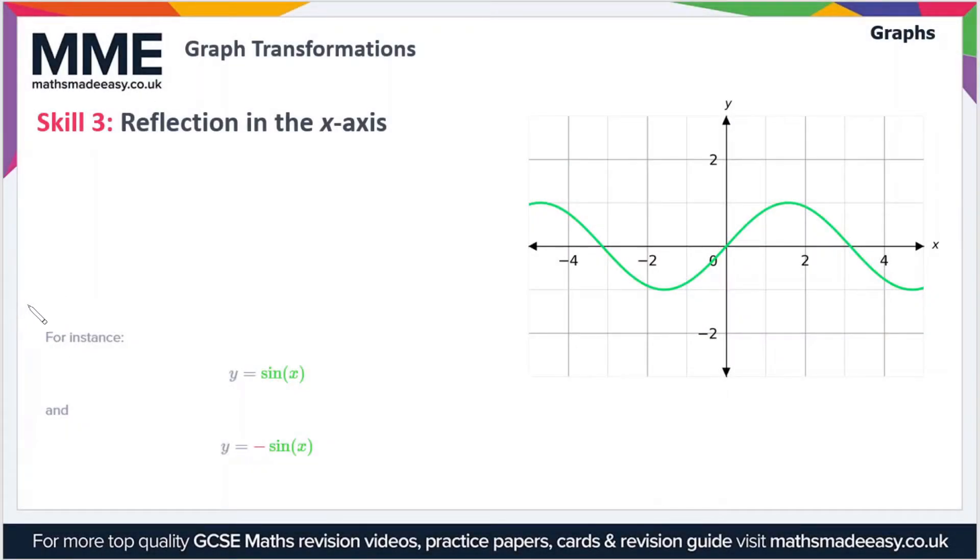Moving on to the third transformation then. This is reflection in the x-axis. When you reflect something in a line, so a graph, everything that's on one side of the line is flipped over and put on the other side. So if that line is the x-axis, then everything on one side is flipped over and put on the other side.